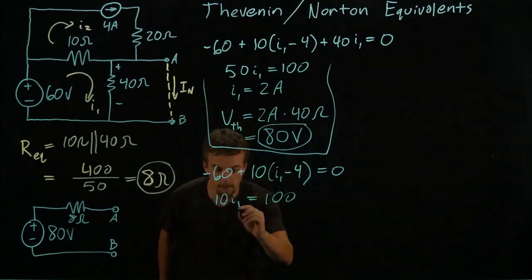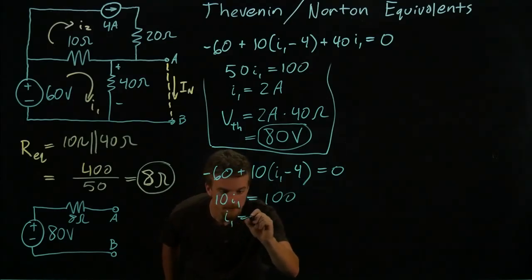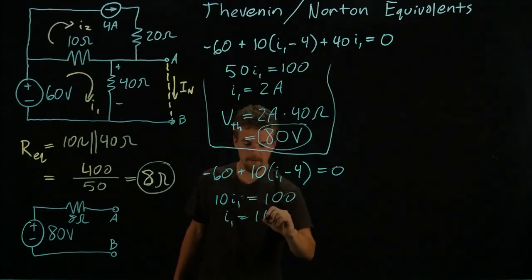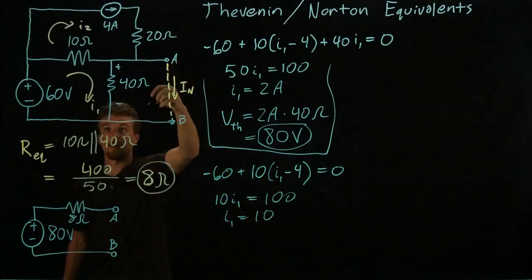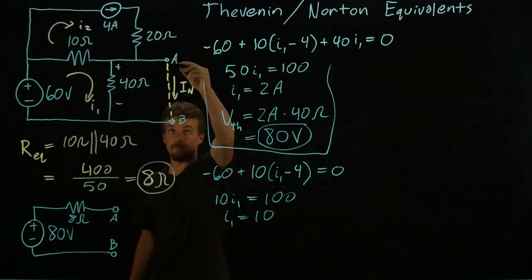It says that I_1 is equal to 10. So now with this short here, this loop current is equal to 10 and this current through this short,